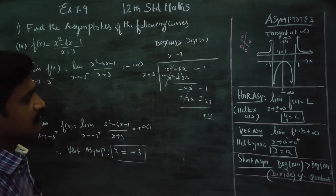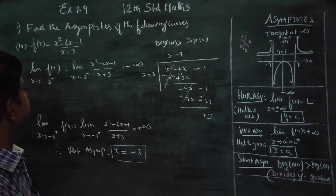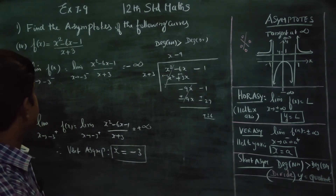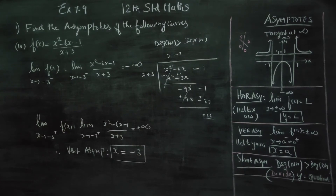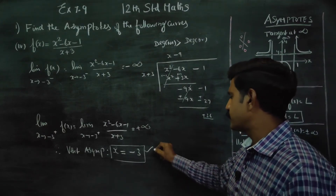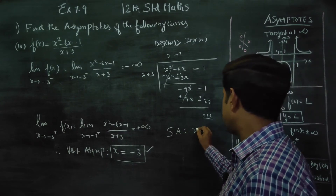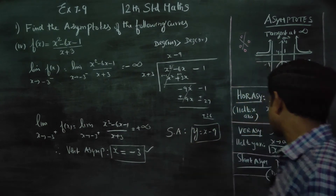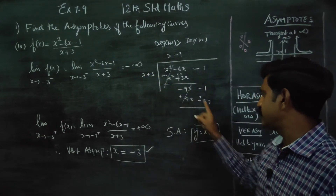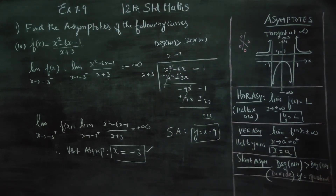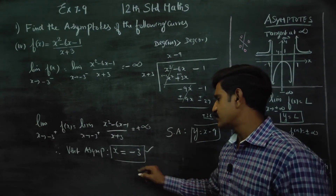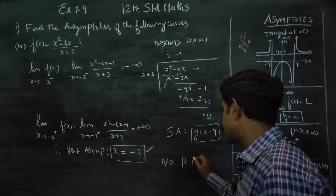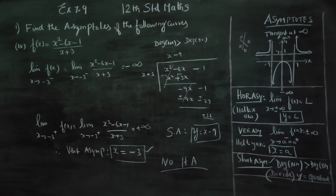Since the degree of the numerator is greater than the degree of the denominator, we perform polynomial long division. We get x minus 9, therefore your slant asymptote will be y equals x minus 9. To conclude: the vertical asymptote is x equals minus 3, the slant asymptote is y equals x minus 9, and we have no horizontal asymptote.